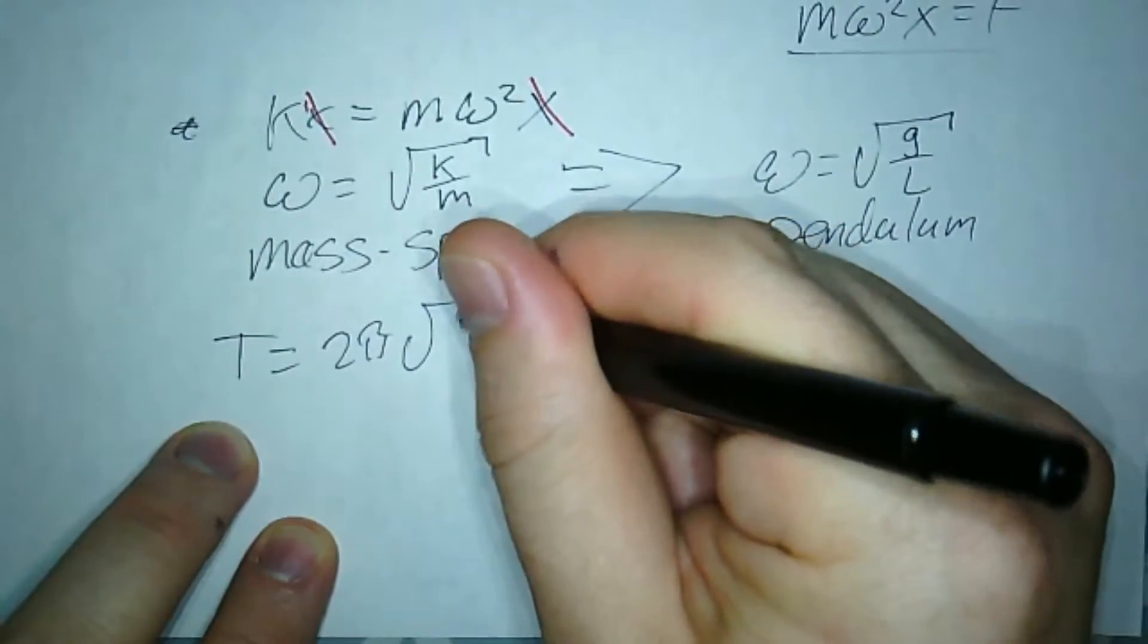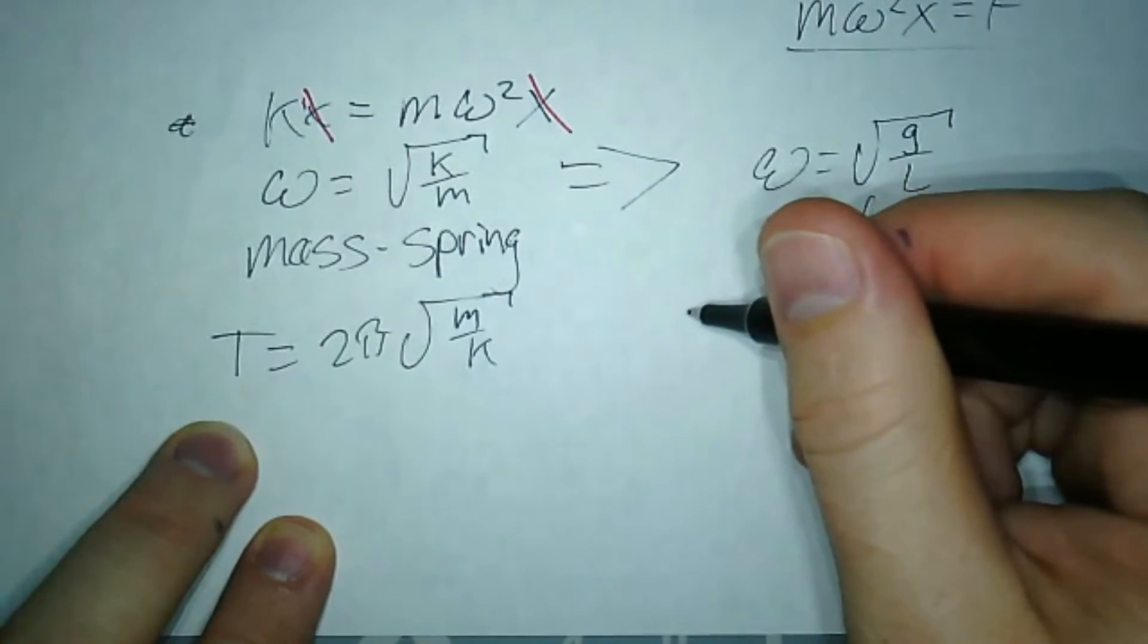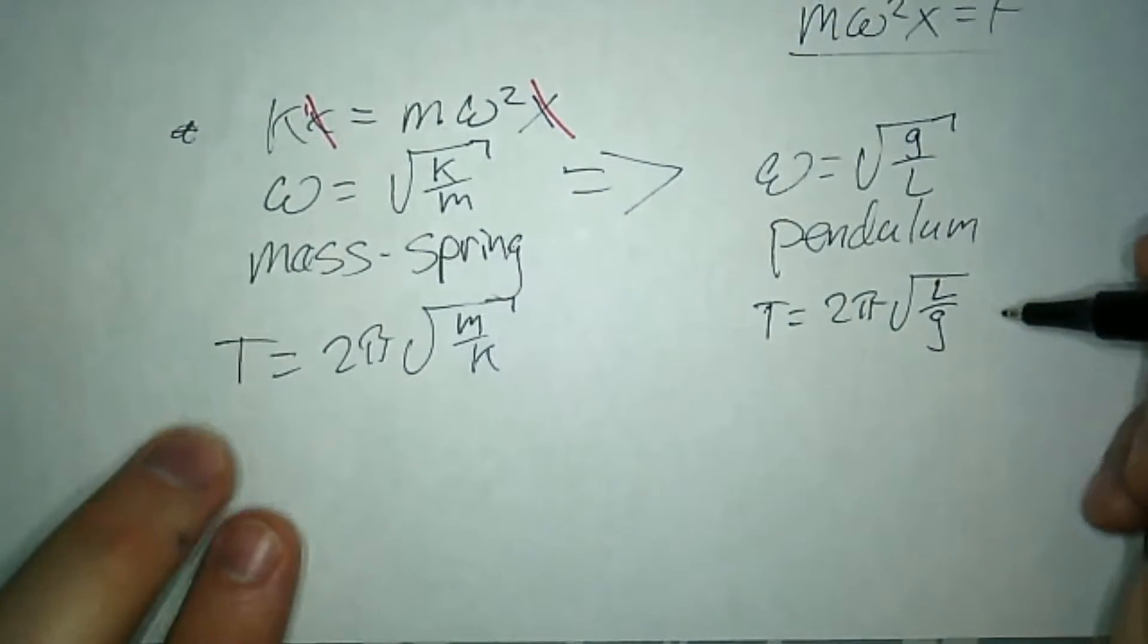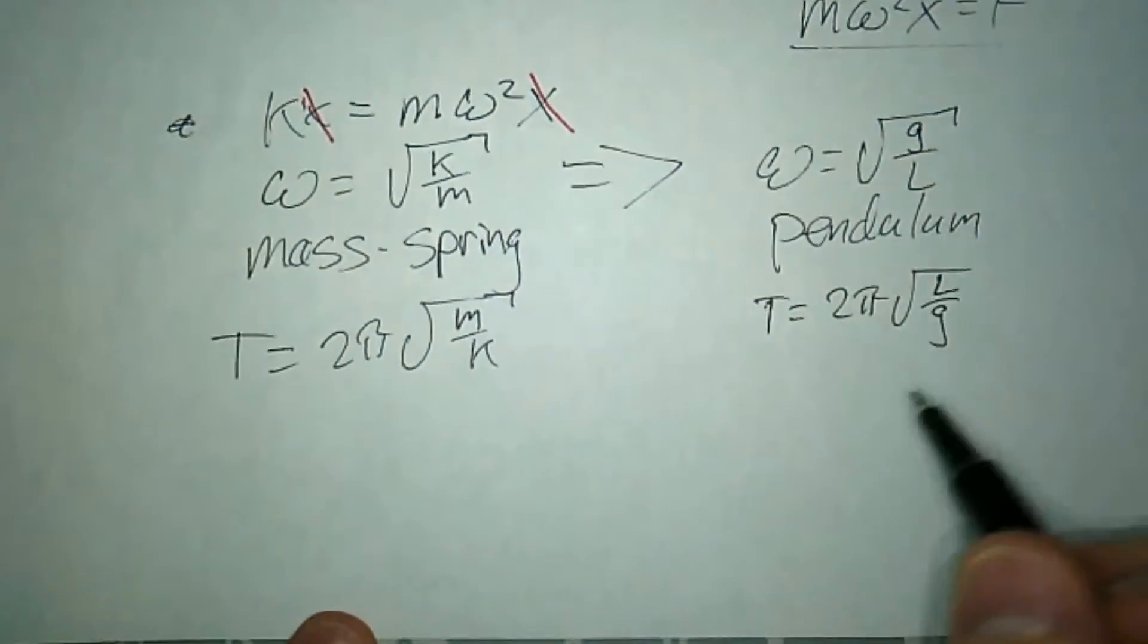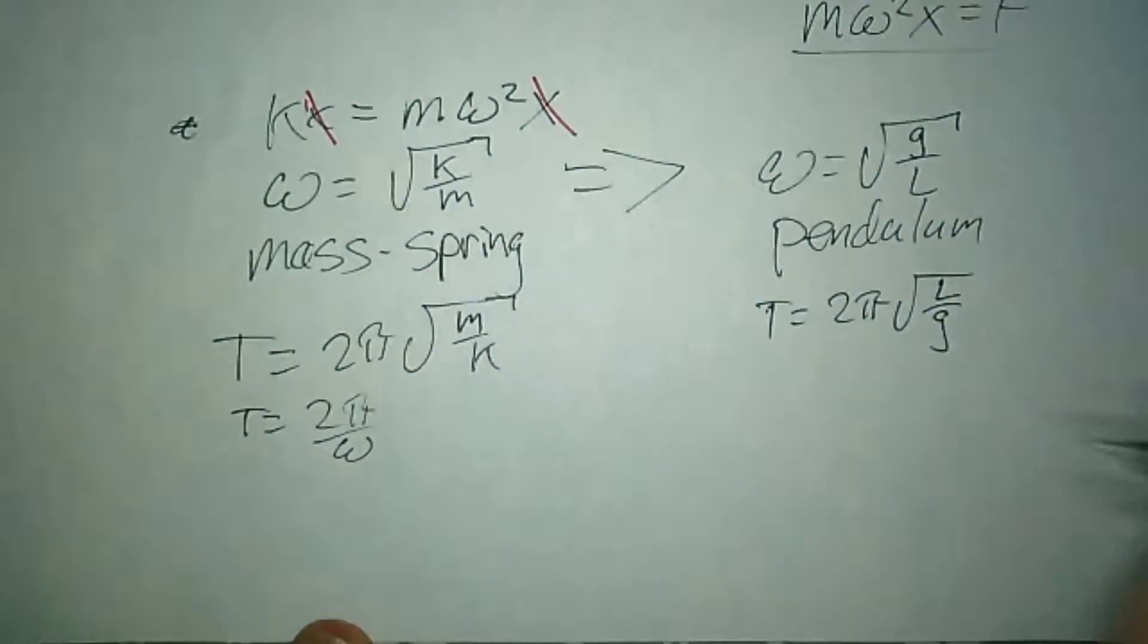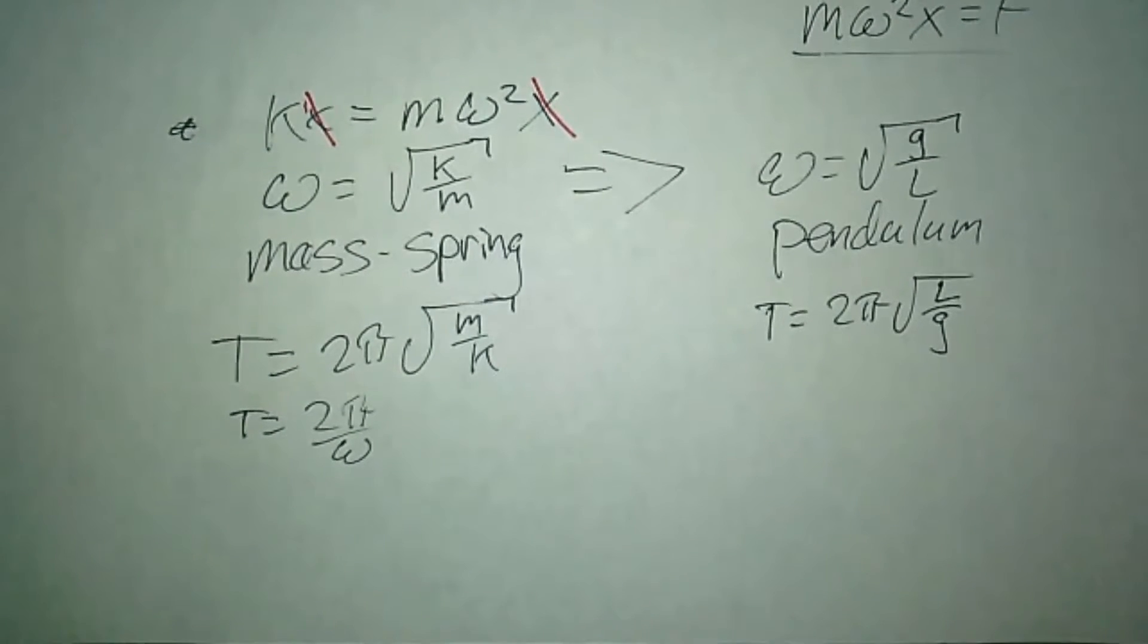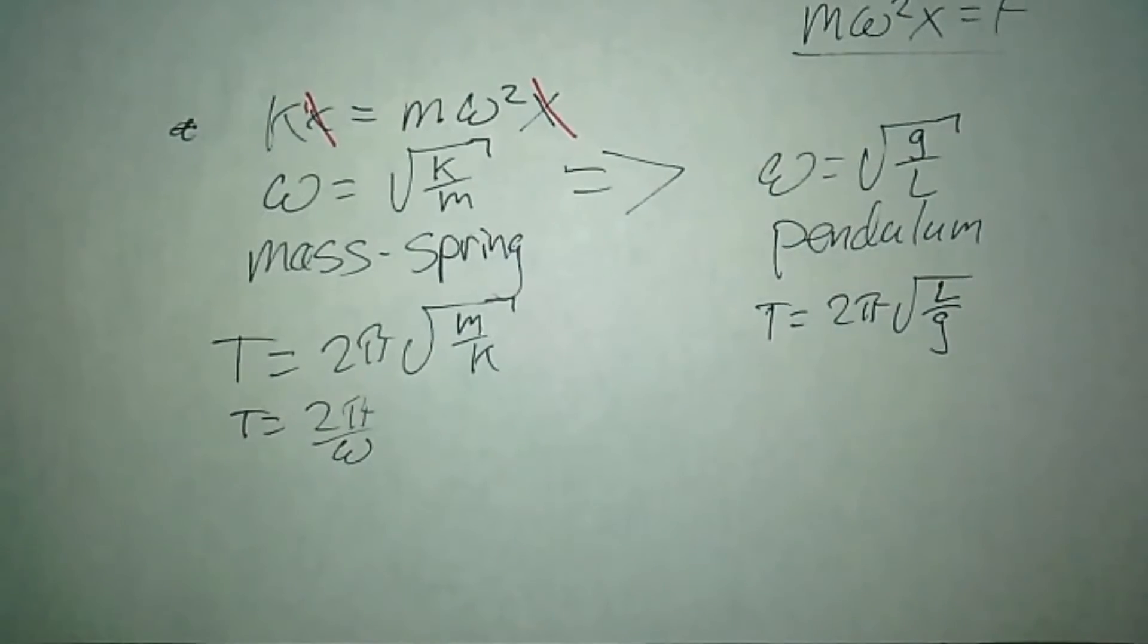When we look at period formulas, period T = 2π√(m/k) for mass-spring, and T = 2π√(l/g) for pendulum. If I put ω in for these equations, they look the same: T = 2π/ω, because k/m flips to m/k.